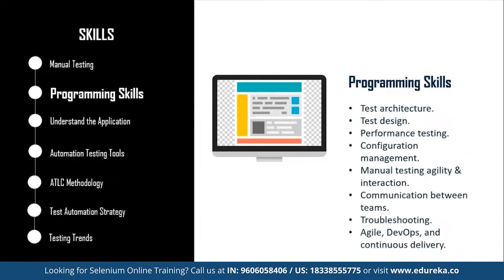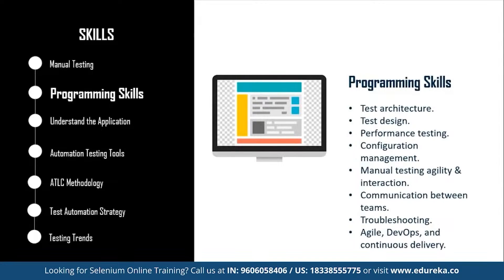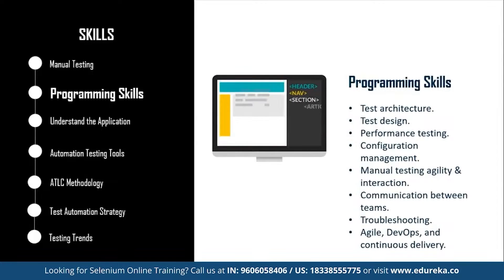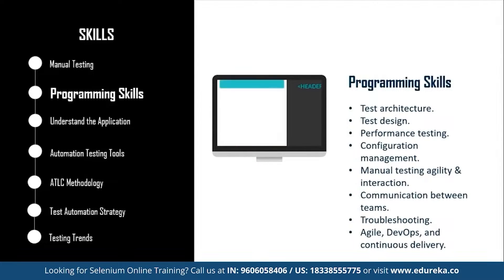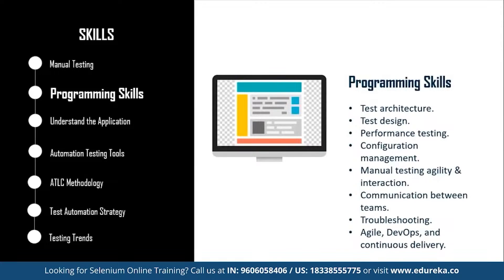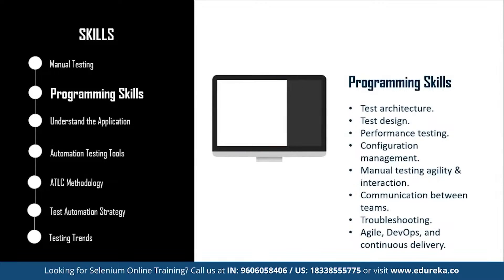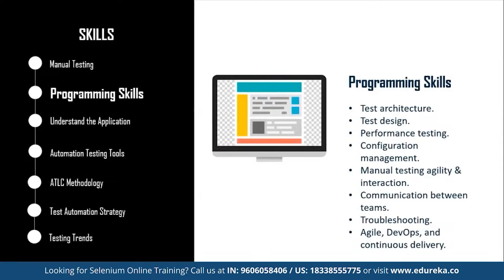There are also a few technical skills a manual tester should master to become a brilliant automation testing engineer, such as test architecture, test design, performance testing, configuration management, manual testing agility, interaction and communication between teams, troubleshooting, Agile DevOps and continuous delivery. The combination of all these skills can help you transition to automated testing easily and smoothly.